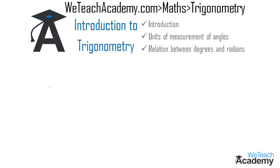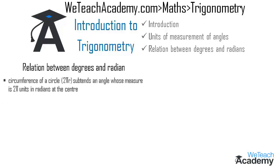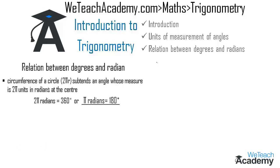Now we discuss the relation between degrees and radians. The circumference of a circle is given by 2πr, which subtends an angle of 2π units in radians at the center. Since the terminal arm of the angle completes one revolution, the circumference subtends 360 degrees. Therefore 2πr corresponds to 360 degrees, and simplifying gives us π radians = 180 degrees.